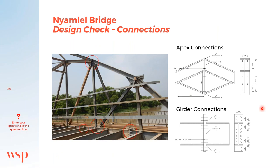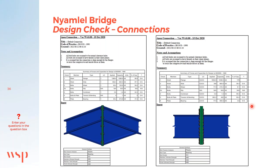Another design check took place on the connections of the steel structure. Focusing on the apex connections along the top chords of the structure, as well as the girder connections running along the girder, the design checks were done in Sumo and showed that the connections used on site are actually okay.